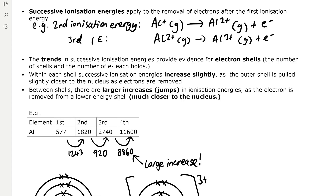The trends in successive ionisation energies provide evidence for electron shells — evidence for the number of shells and the number of electrons each holds. Within each shell, successive ionisation energies increase slightly as the outer shell is pulled slightly closer to the nucleus as electrons are removed. Between shells there are larger increases, also known as jumps, in ionisation energies as the electron is removed from a lower energy shell which is much closer to the nucleus.